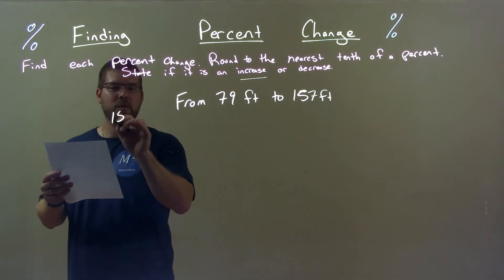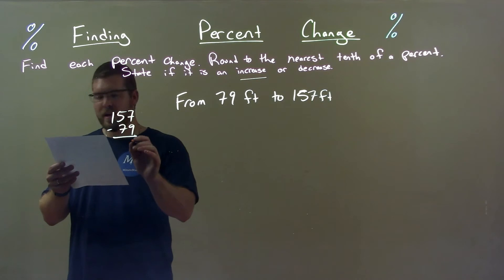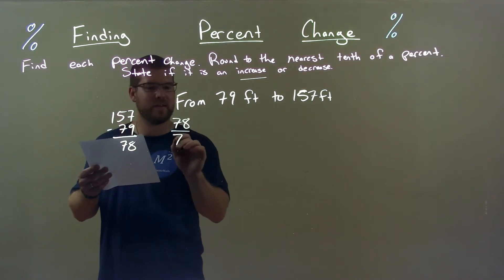Difference: take the large number, 157, and subtract the smaller number, 79. Get an answer of 78. Take that number, 78, divide it by the first number, 79.